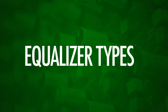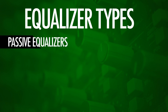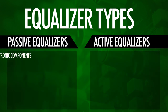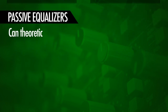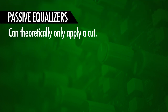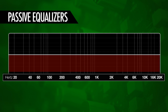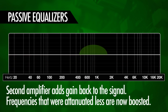First off for today we're going to take a look at the different types of EQ circuitry that can be used. We've got passive EQs and active EQs. Passive EQs make use of passive electronic components like inductors and capacitors. In theory a passive equalizer can only apply a cut. How this works is that all frequencies are attenuated by a certain amount, except for the frequencies that need to be boosted, which are attenuated less. The boost is achieved by a second amplifier which boosts all frequencies evenly.